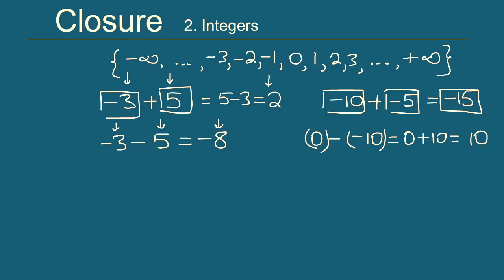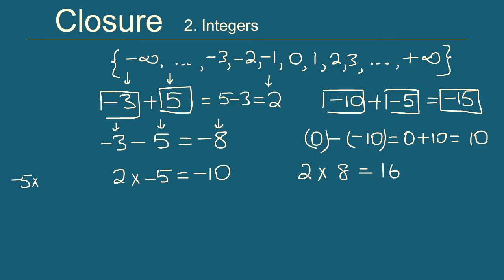Now let's talk about multiplication. Take the integer 2 and multiply by minus 5 — we get minus 10. Another example: 2 times 8 gives 16. How about two negative integers: minus 5 times minus 8? Minus times minus becomes plus, so we get 40. In all these cases when we multiply two integers we always get an integer, so integers are closed under multiplication.